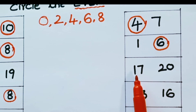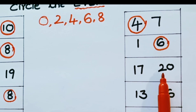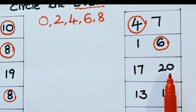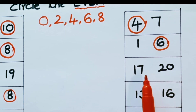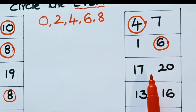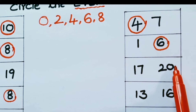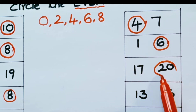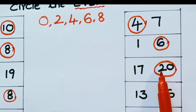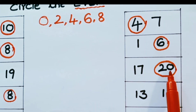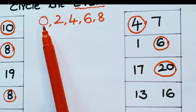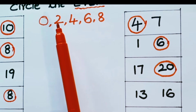What are the two numbers in the next row? 17 and 20. What is the even number? It is 20. Why is 20 an even number? Because 20 is ending with the number 0, and 0 is an even number.